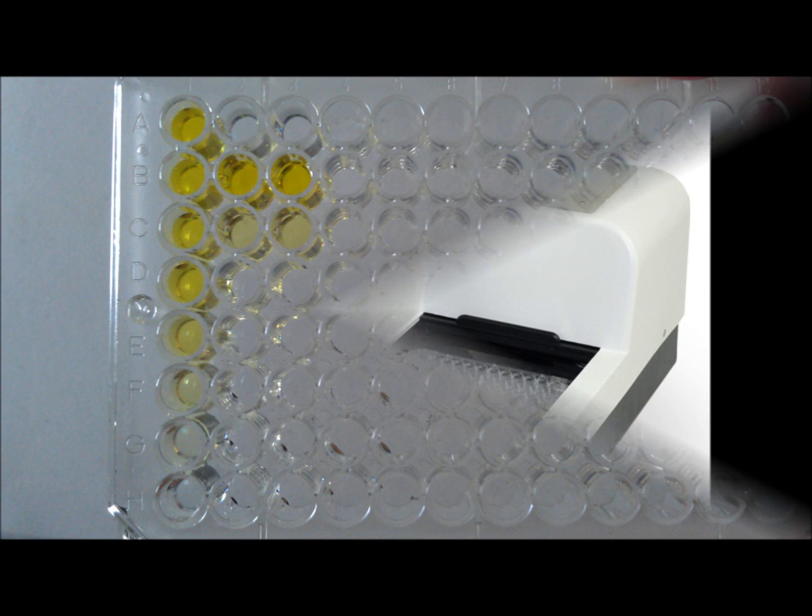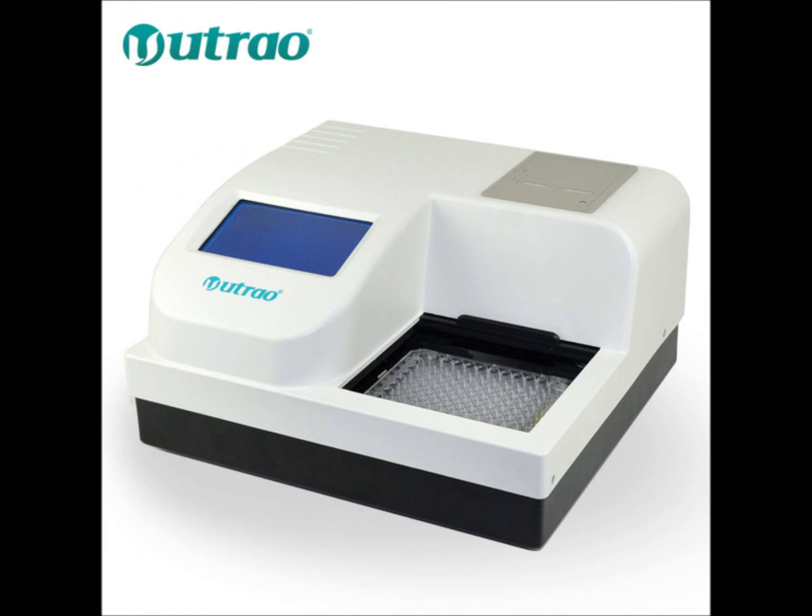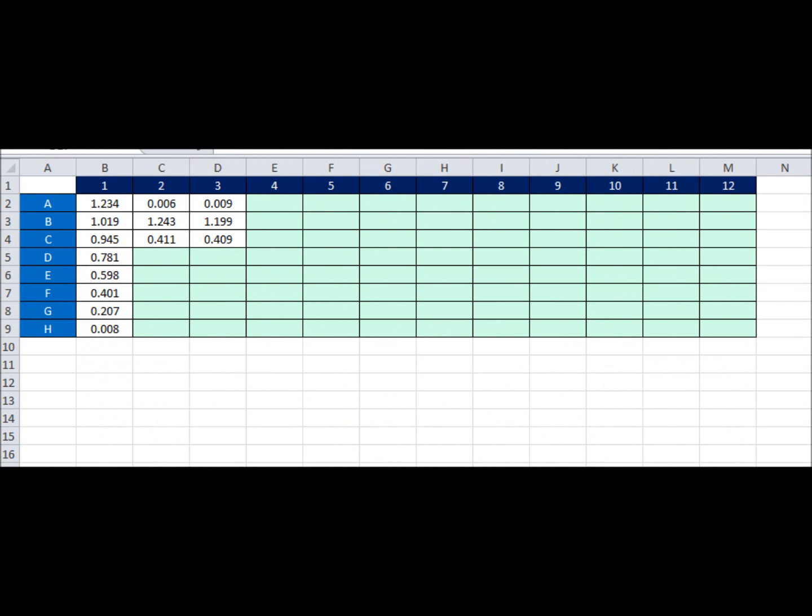To be more accurate, the ELISA plate is placed on an ELISA reader which is set to an absorbance reading value of 450 nanometers. Solid numeric results are given and analyzed on Excel.